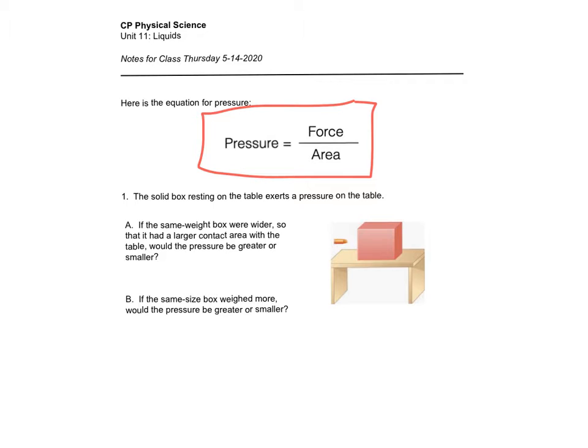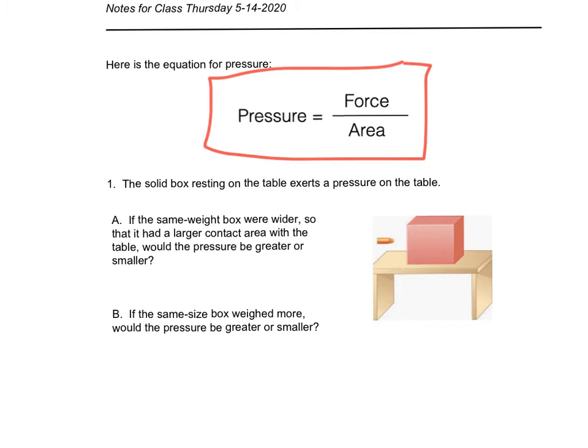So then you had a couple scenarios here. It was a solid box resting on a table exerts a pressure on the table. I will concede that this is a solid box and a solid table, so at the surface it doesn't seem to go well with a unit called liquids. But be that as it may, it's our introduction to the concept. And part A says if the same weight box were wider. So what we have here is a certain contact area of the box on the table. That area, which could be measured in square inches, square meters.